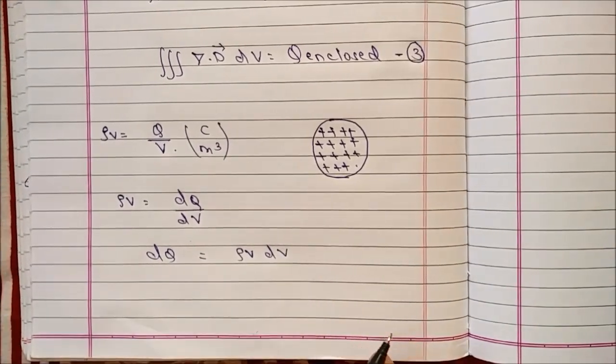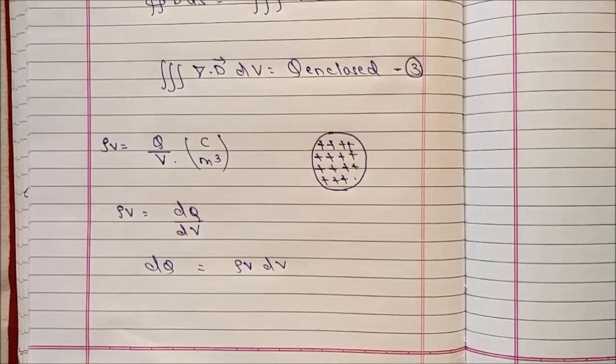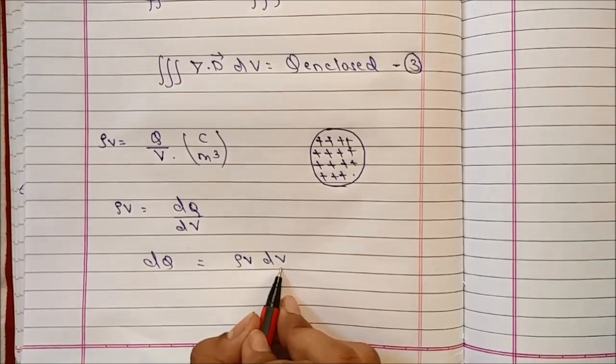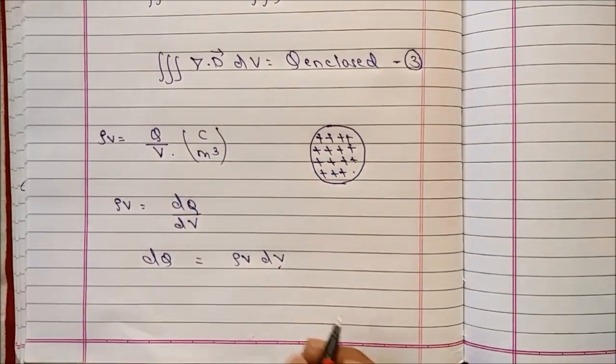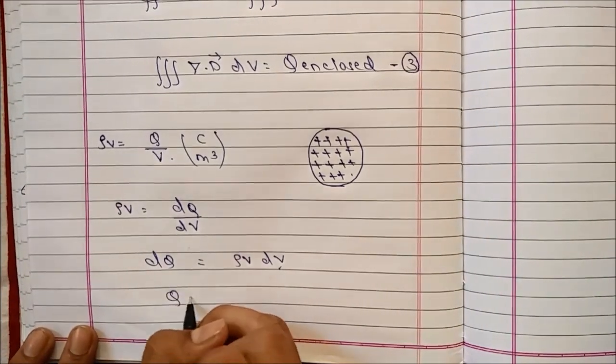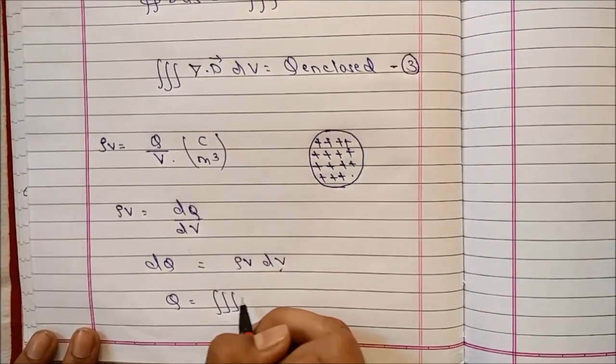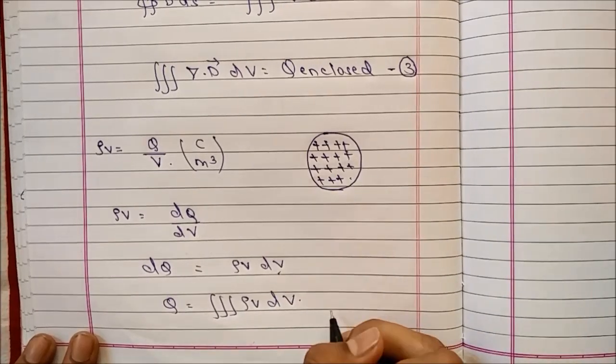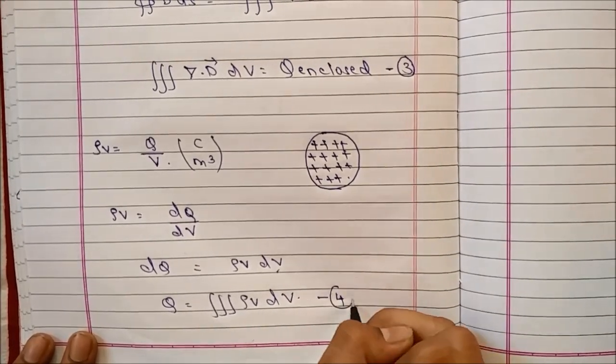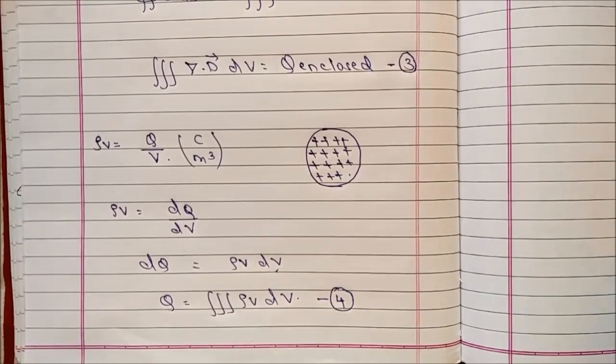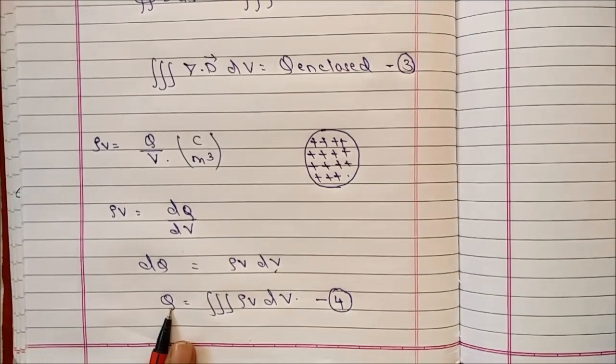Now I need to remove the differentiation sign, so we need to take integration. As this is volume, it will have triple integration. So it will become Q equals the triple integral of rho_V dV.